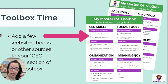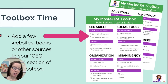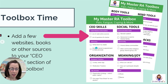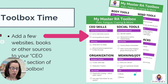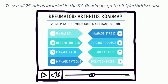I also want you to add a few websites, books, or other sources to the CEO section of your toolbox. The toolbox is your at-a-glance two-page list of your biggest tools in different areas of managing RA. CEO skills include medical information, advocacy, and organization. Then we have social tools, which we'll cover in units seven and eight, along with meaning and joy — how you can still have a meaningful, joyful existence despite RA — as well as body tools, mind tools, and life hacks. I'm really looking forward to developing these toolboxes with you all.